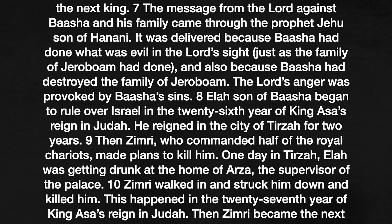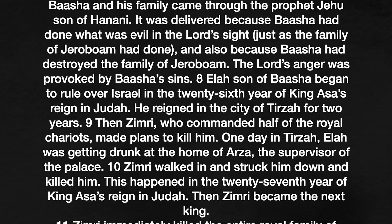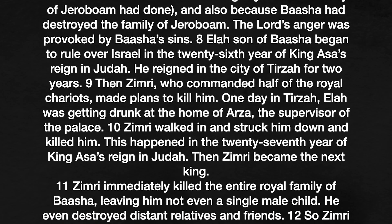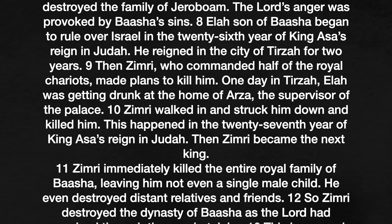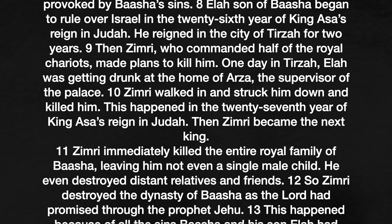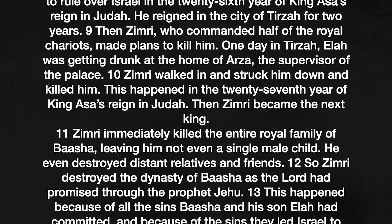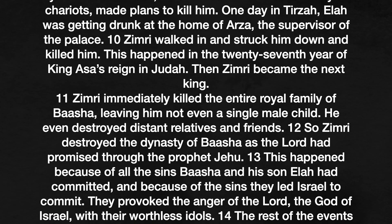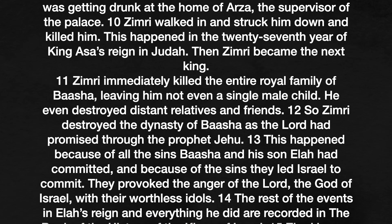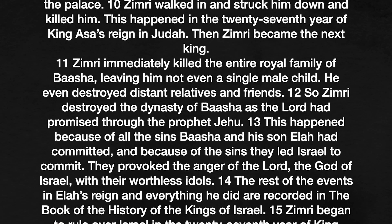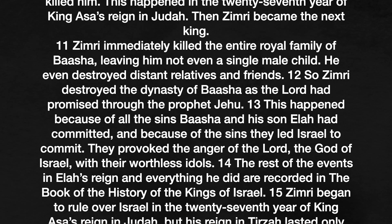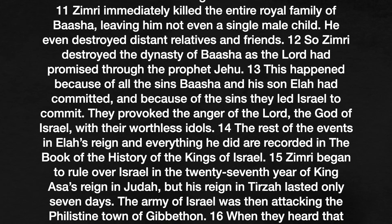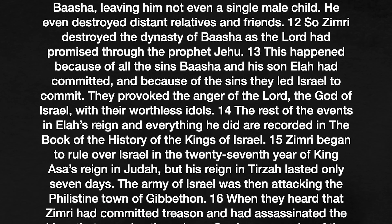Elah, son of Baasha, began to rule over Israel in the twenty-sixth year of King Asa's reign in Judah. He reigned in the city of Tirzah for two years. Then Zimri, who commanded half of the royal chariots, made plans to kill him. One day in Tirzah, Elah was getting drunk at the home of Arza, the supervisor of the palace. Zimri walked in and struck him down and killed him. This happened in the twenty-seventh year of King Asa's reign in Judah. Then Zimri became the next king. Zimri immediately killed the entire royal family of Baasha, leaving not even a single male child. He even destroyed distant relatives and families. So Zimri destroyed the dynasty of Baasha, as the Lord had promised through the prophet Jehu. This happened because of all the sins Baasha and his son Elah had committed and the sins they led Israel to commit. They provoked the anger of the Lord, the God of Israel, with their worthless idols.